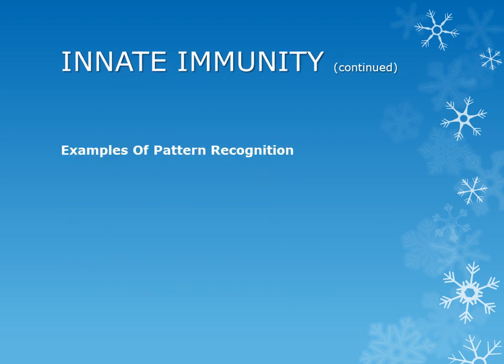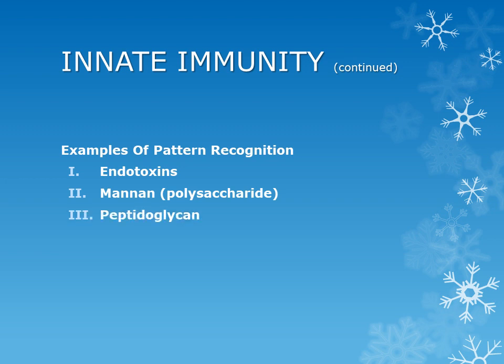Now let's talk about some important examples of pattern recognition and the various receptors involved with them. At the top of the list is lipopolysaccharide or endotoxin, then there is the presence of polysaccharide mannose, peptidoglycan, and nucleic acids. These are the various patterns recognized by different types of receptors.